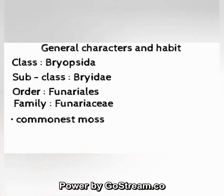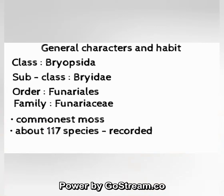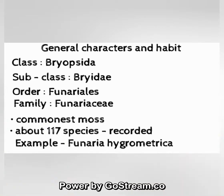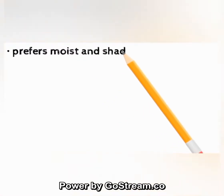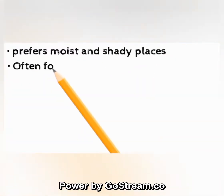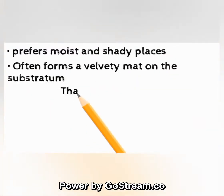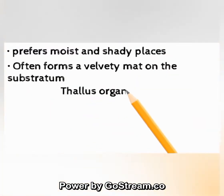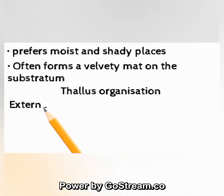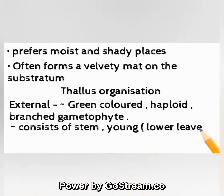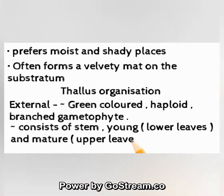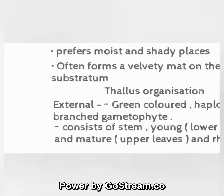Thallus organization — external: the green-colored haploid branched gametophyte consists of a stem, young lower leaves, mature upper leaves, and rhizoids. A diagram of Funaria showing gametophyte and sporophyte is shown here.